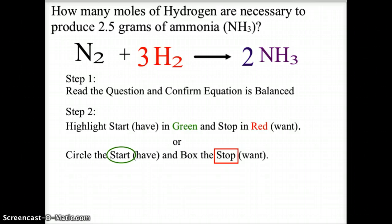With all stoichiometry problems make sure you read the question carefully and confirm that your equation is balanced. So we have 2 nitrogen in the nitrogen molecule, we have 6 hydrogen in the 3 H2 molecules, and if we look at ammonia the 2 molecules gives us 2 atoms of nitrogen and 6 atoms of hydrogen. So this is a balanced chemical equation.